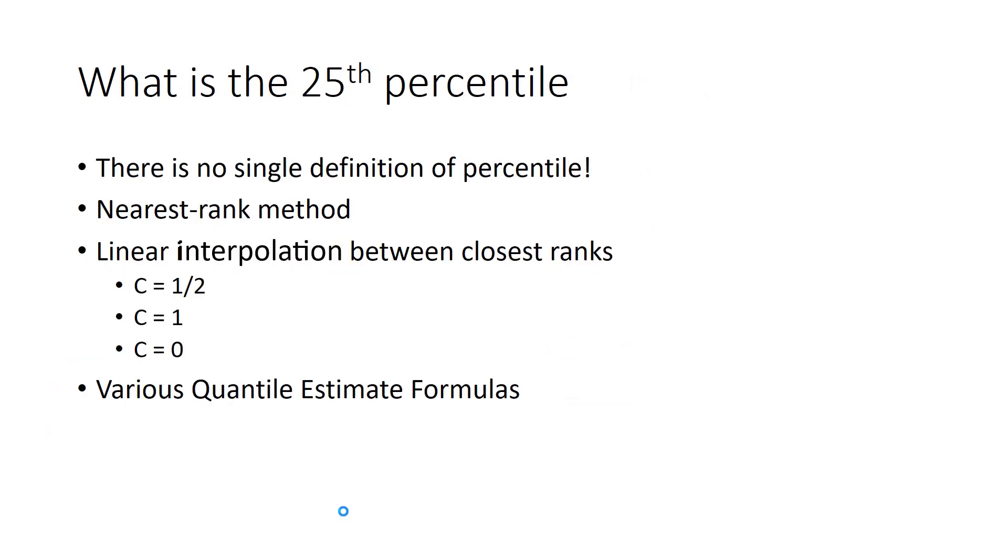And now, we could think about the question of what exactly is the 25th percentile. And here we get into an even bigger issue. So, if we're going to take the first quartile to be the 25th percentile, we have to look at what is the definition of a percentile. And, oh no, there's not one single definition of percentile. You can look this up. There are a lot of different ways that people have defined percentiles. There's the nearest rank method. There's linear interpolation. There's linear interpolation between closed ranks. There are three variants on this method. And then there's actually a lot of different formulas that are used to estimate quantiles. I mean, the 25th percentile is the first quartile. So, there are various quartile estimation formulas.